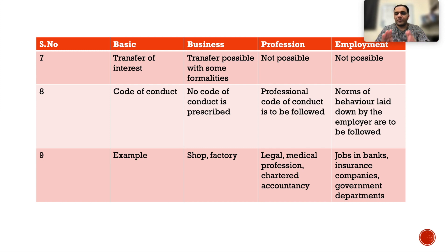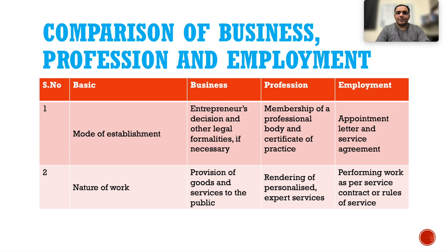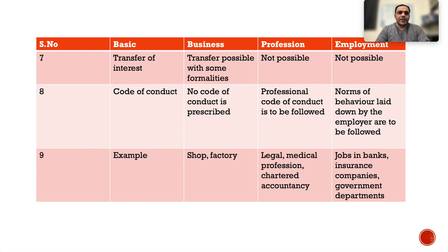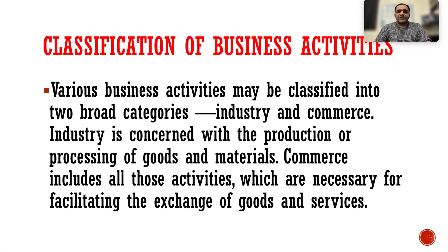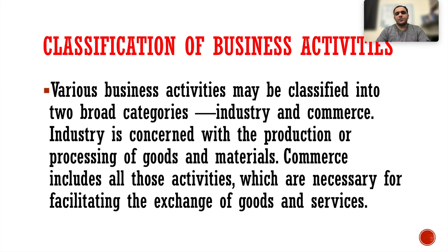That completes the comparison of business, profession and employment. Now we look at the classification of business activities. Various business activities may be classified into two broad categories: industry and commerce. Industry is concerned with the production or processing of goods and materials. Commerce includes all those activities which are necessary for facilitating the exchange of goods and services.